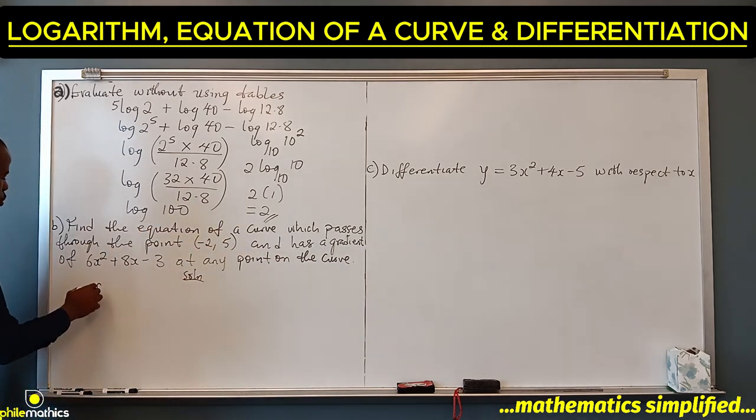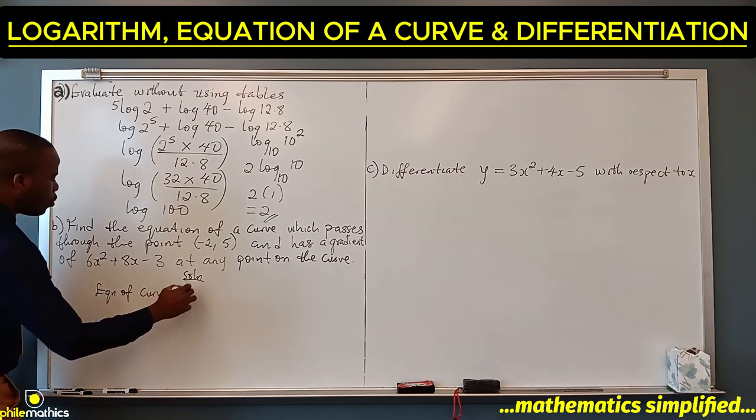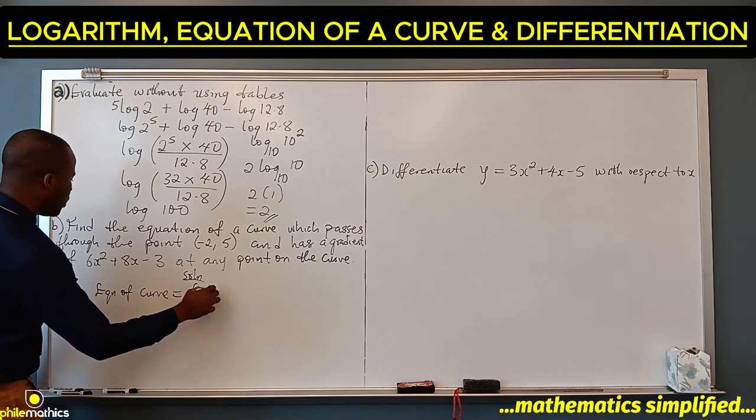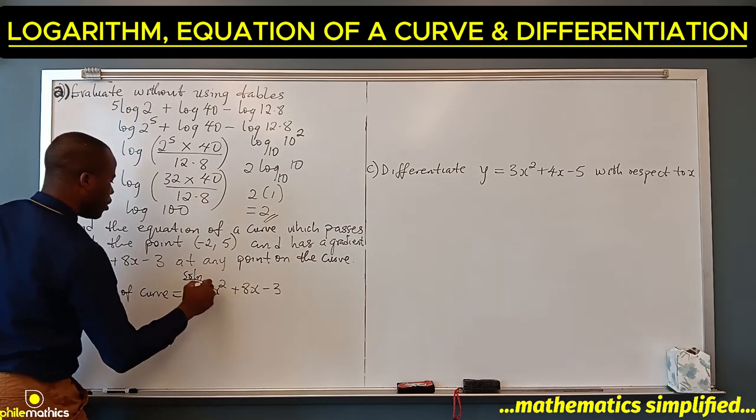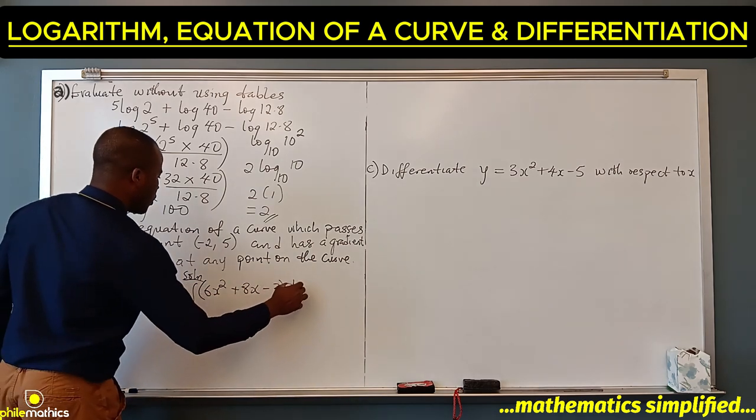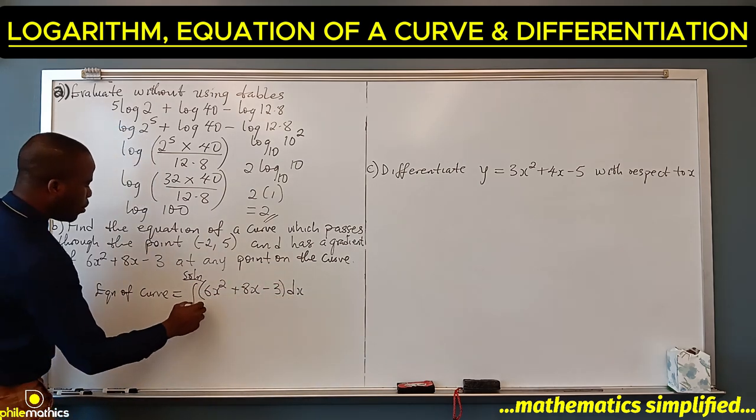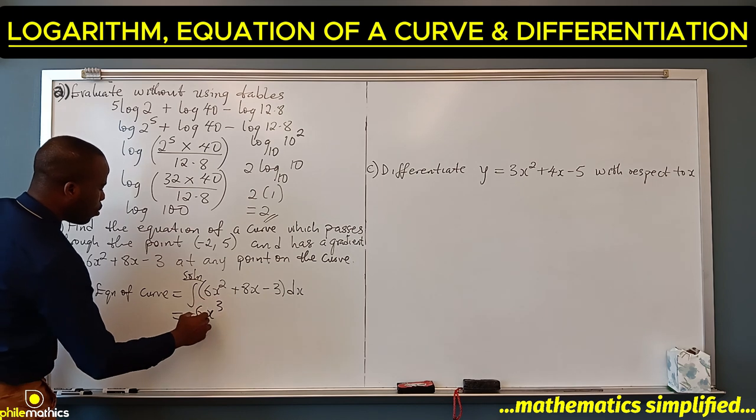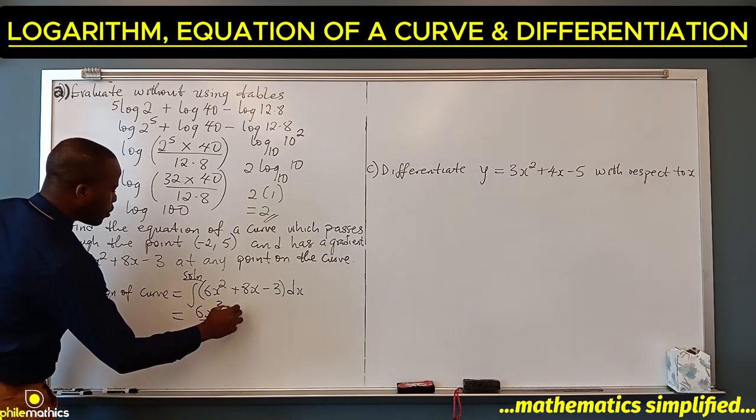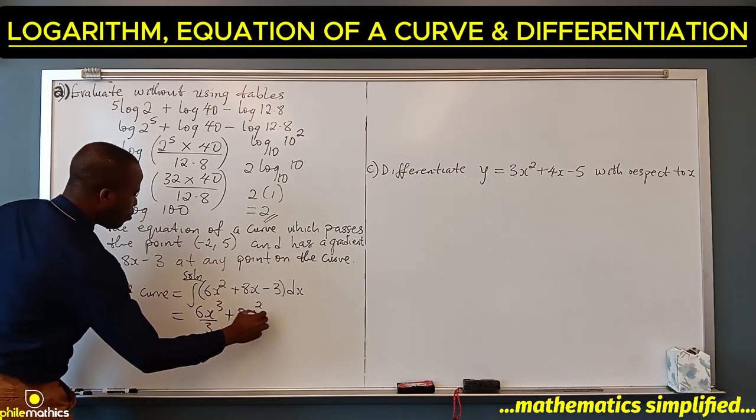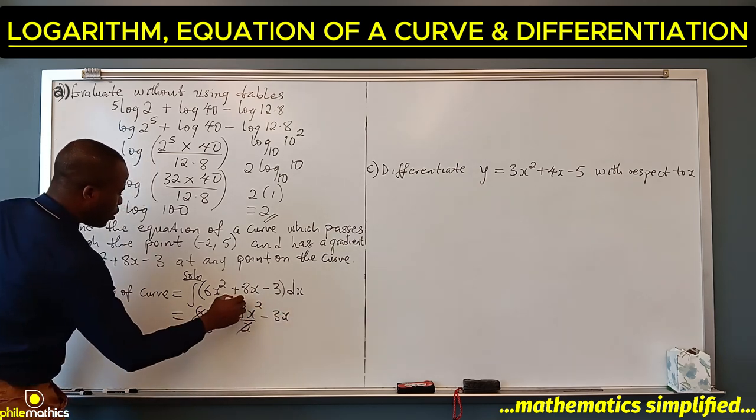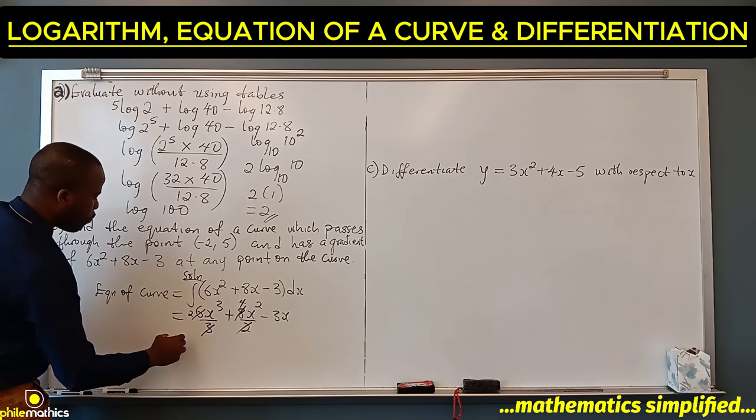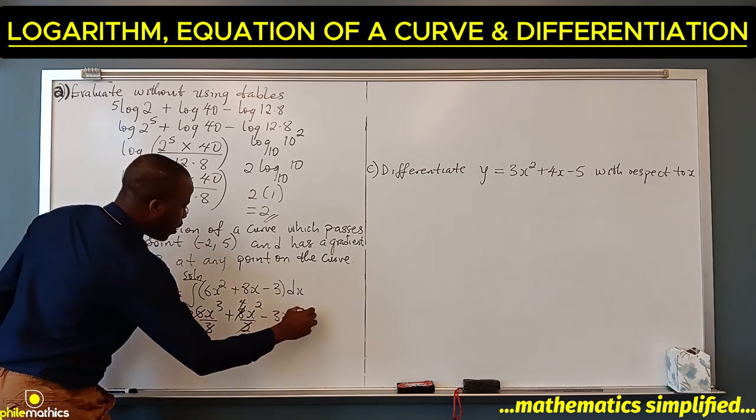The equation of the curve will be the integral of 6x square plus 8x minus 3 dx. If we integrate this, it will be 6x cube over 3, plus 8x square over 2, minus 3x. This simplifies to 2x cube plus 4x square minus 3x plus k, where k is the constant of integration.